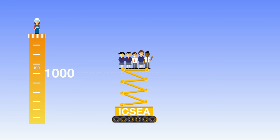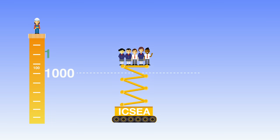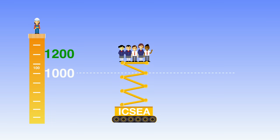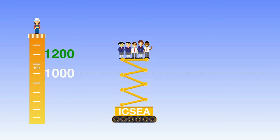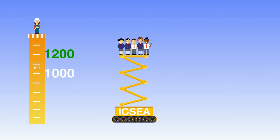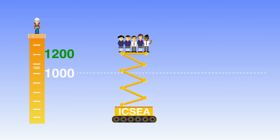A school with an index of 1,200 has students who, on average, are two standard deviations above the national mean level of socio-educational advantage. On average, these students come to school with a great level of advantage.